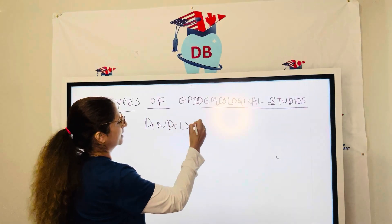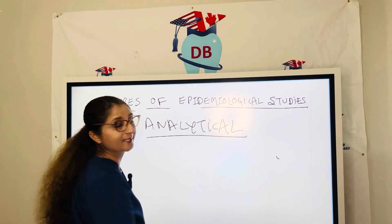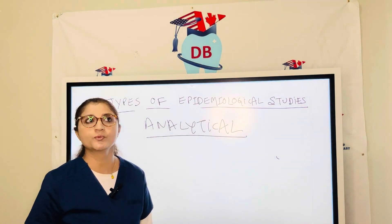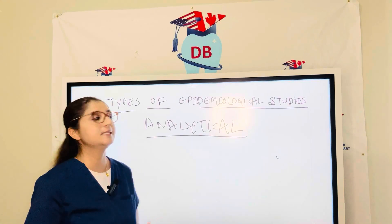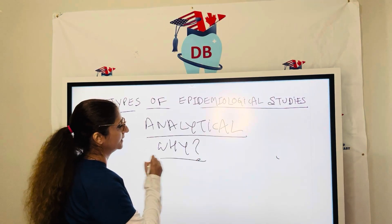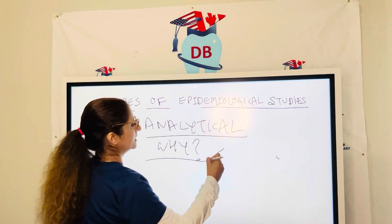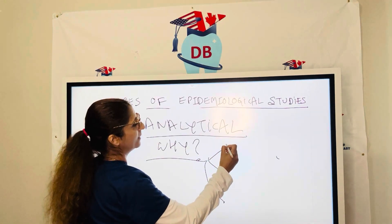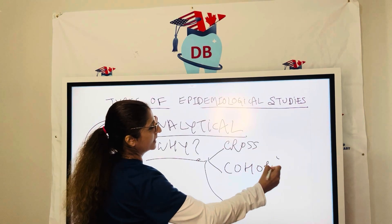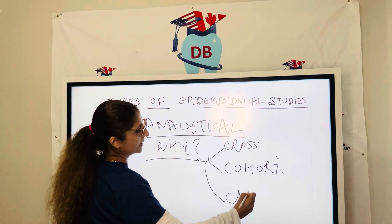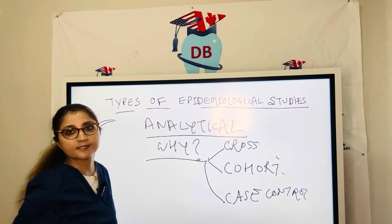Analytical studies are studies in which we are analyzing the disease. We are trying to determine the etiology of the disease — why this disease has happened. Analytical studies are divided into three types: number one, cross-sectional; number two, cohorts; and number three, case control. Let us see each of these studies separately.